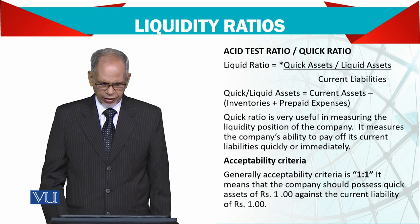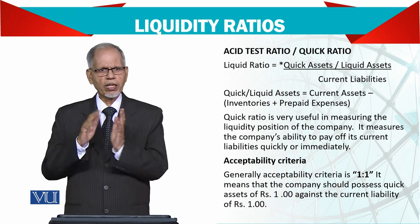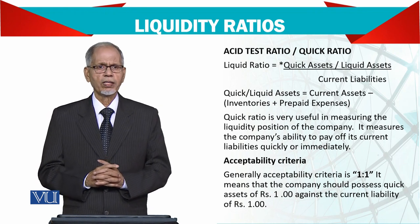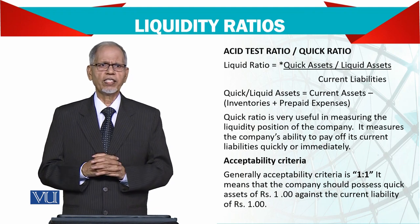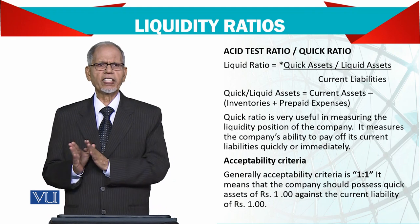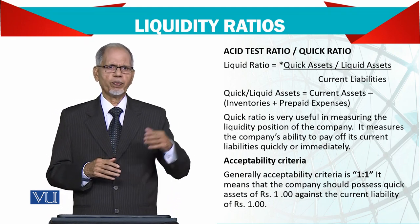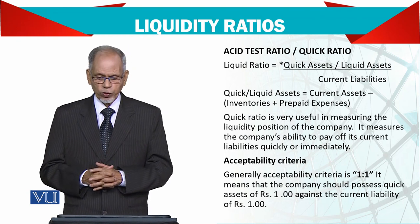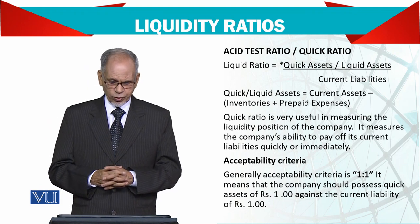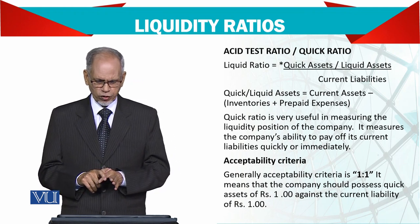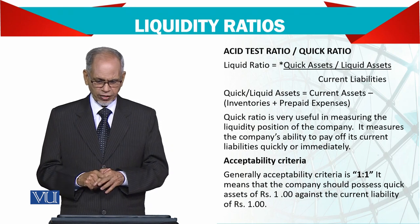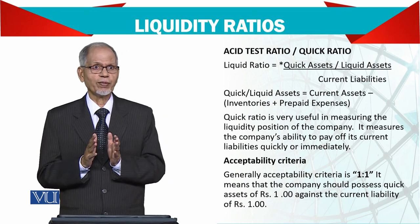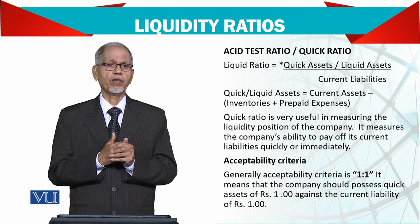In the current ratio we take all current assets, but in the acid-test ratio or quick ratio we subtract two things from total current assets: number one, inventory, and number two, prepaid expenses — because prepaid expenses are also not available to pay immediately. So we minus these two items, and the remaining current assets are divided by current liabilities. This ratio is very useful in measuring the liquidity position of the company. It measures the company's ability to pay off its current liabilities quickly and immediately — if all your creditors come at once demanding payment, you should have enough liquid cash available to pay them off.